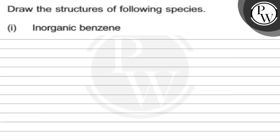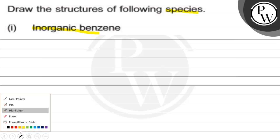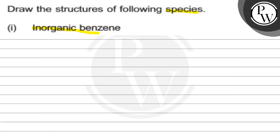Hello Bacho, let's read this question. The question says: draw the structure of the following species in organic benzene. So, inorganic benzene is a borazine. The main key concept of this question is inorganic benzene.